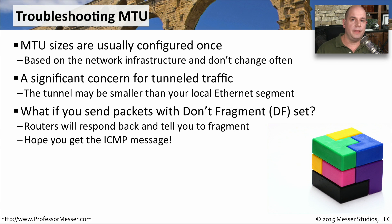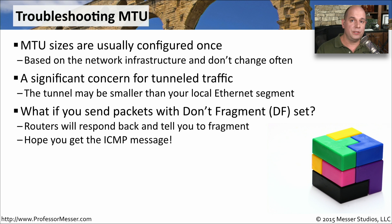If you are going into one of these connections that requires a smaller MTU, and your application is sending data with a bit inside of the IP packet that says don't fragment this information, then obviously the router can't do anything with it. It needs to fragment to send it on its way, but you've told it specifically do not fragment this data. The router will send an ICMP message back to the original station saying it wasn't able to send this on its way because it needs to fragment, but you've told it not to fragment.